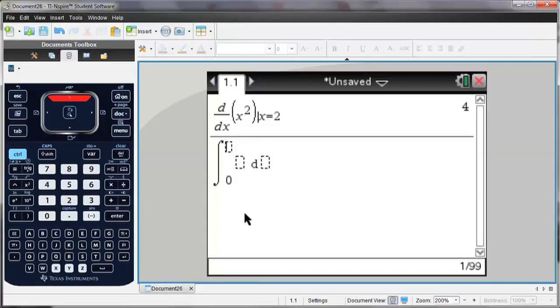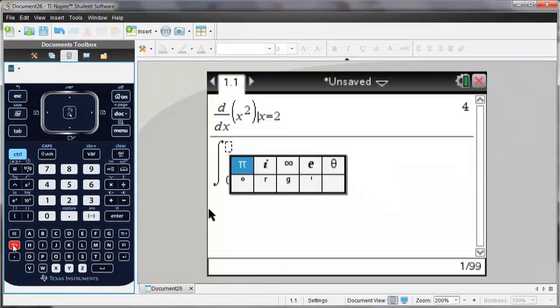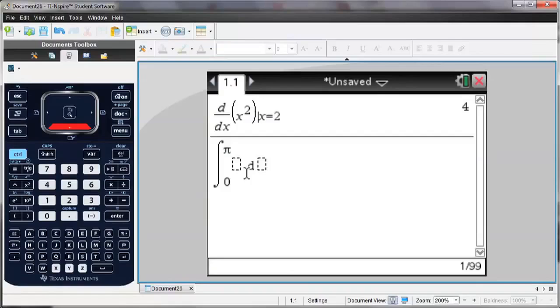I can just enter the interval for which I'm going to integrate. I'll go from 0 to pi, and notice the pi key is down below next to the h. And again, my function, let's do sine of x dx. Hit enter, and there's the value of the integral between 0 and pi.